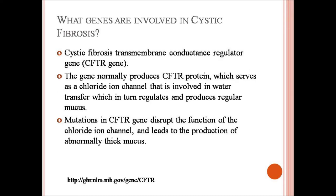The cystic fibrosis transmembrane conductance regulator gene, or CFTR gene, is involved in producing CFTR protein, which is used as a chloride ion channel. This channel is important for water transfer across membranes, and is particularly used in the production of mucus. Mutations in the CFTR gene disrupt the function of the chloride ion channel and lead to the production of abnormally thick mucus seen in affected individuals.